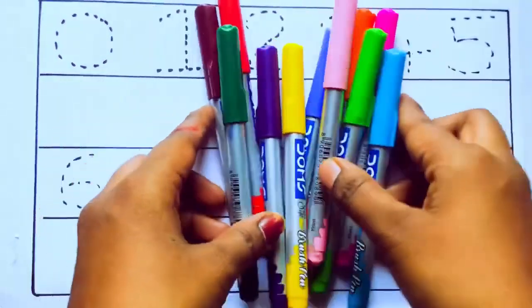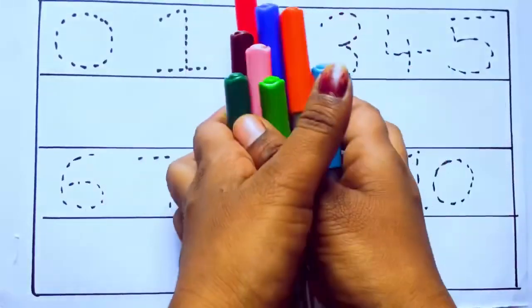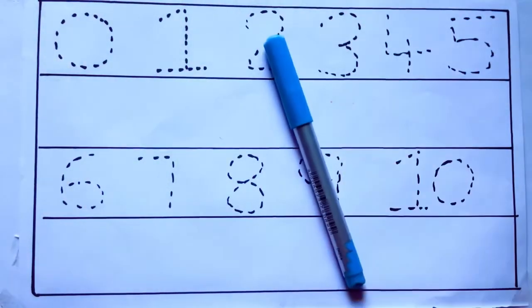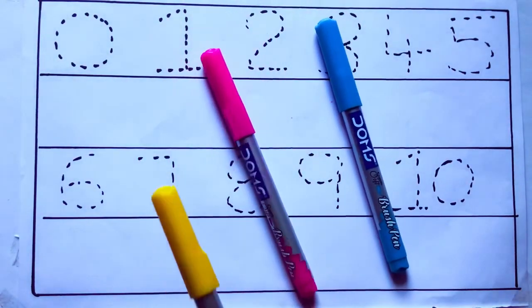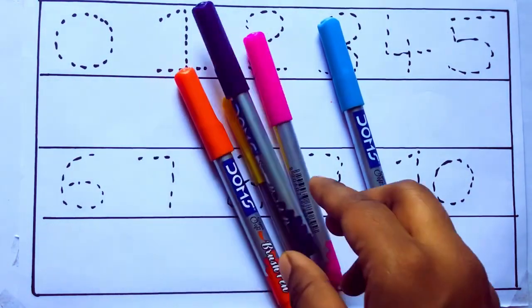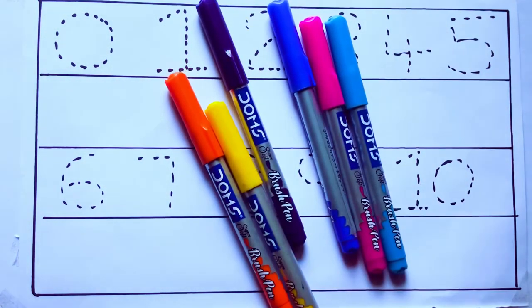Let's learn some colors. These are all the color pencils. Let's learn the names: sky blue color, pink color, yellow color, orange color, violet color, blue color.